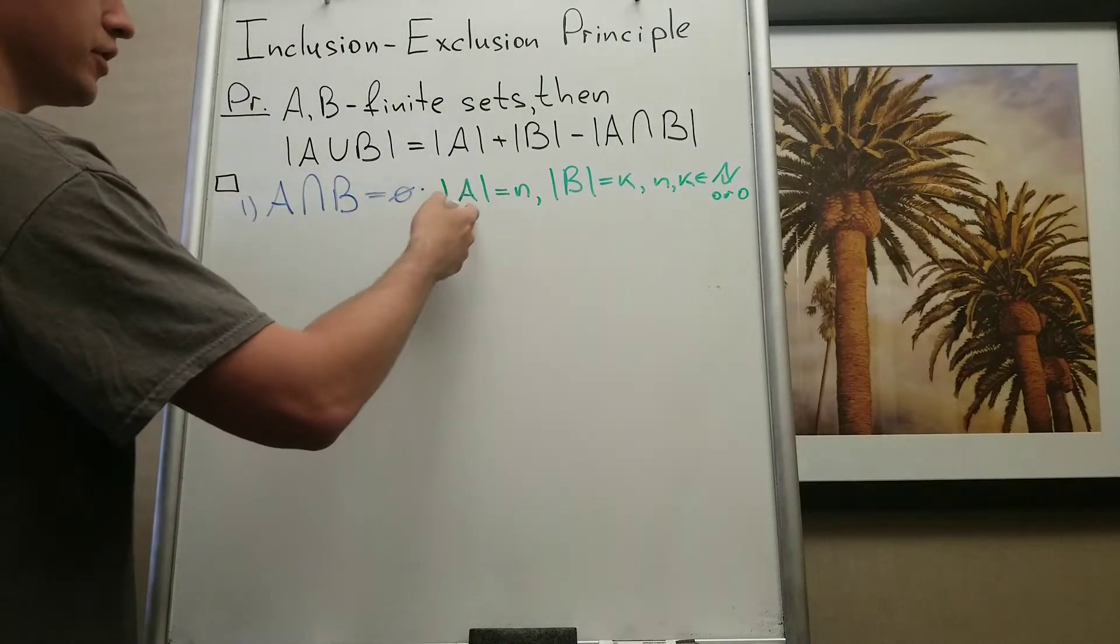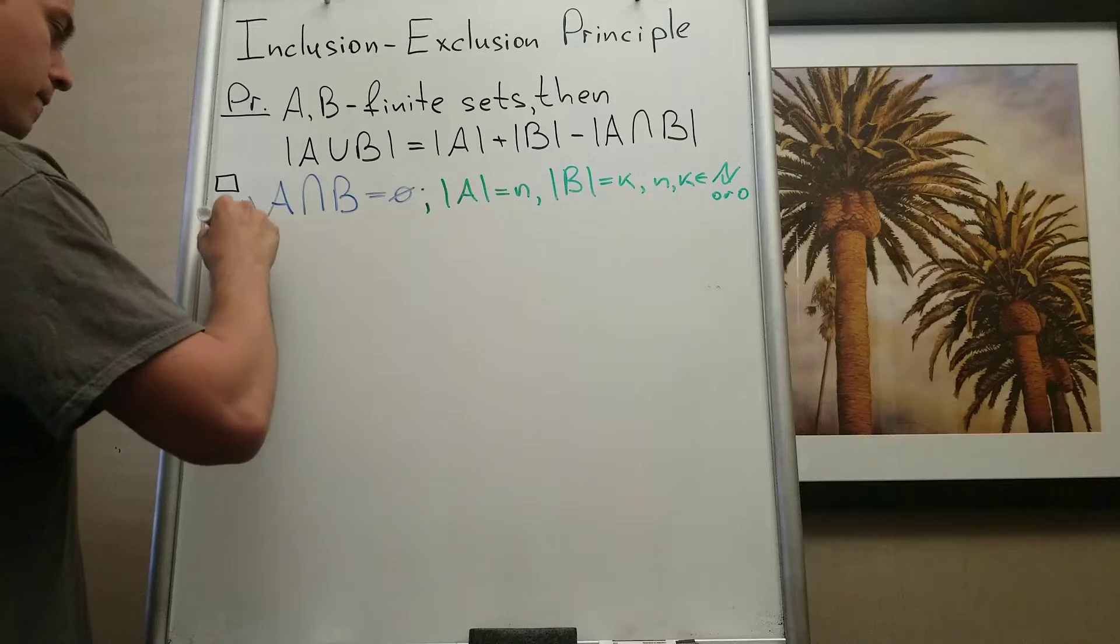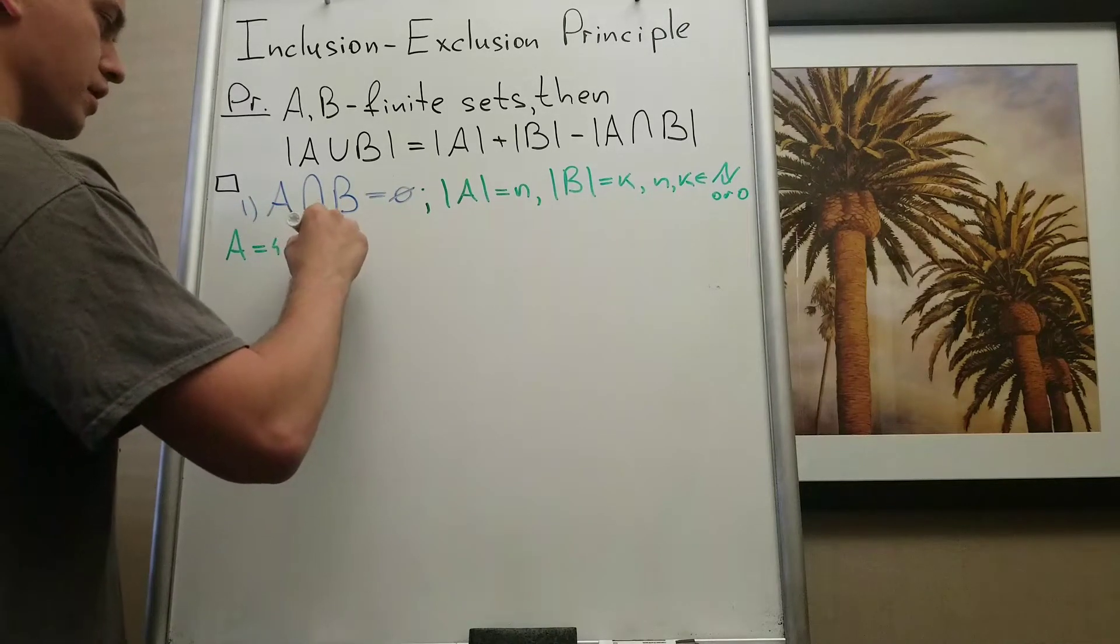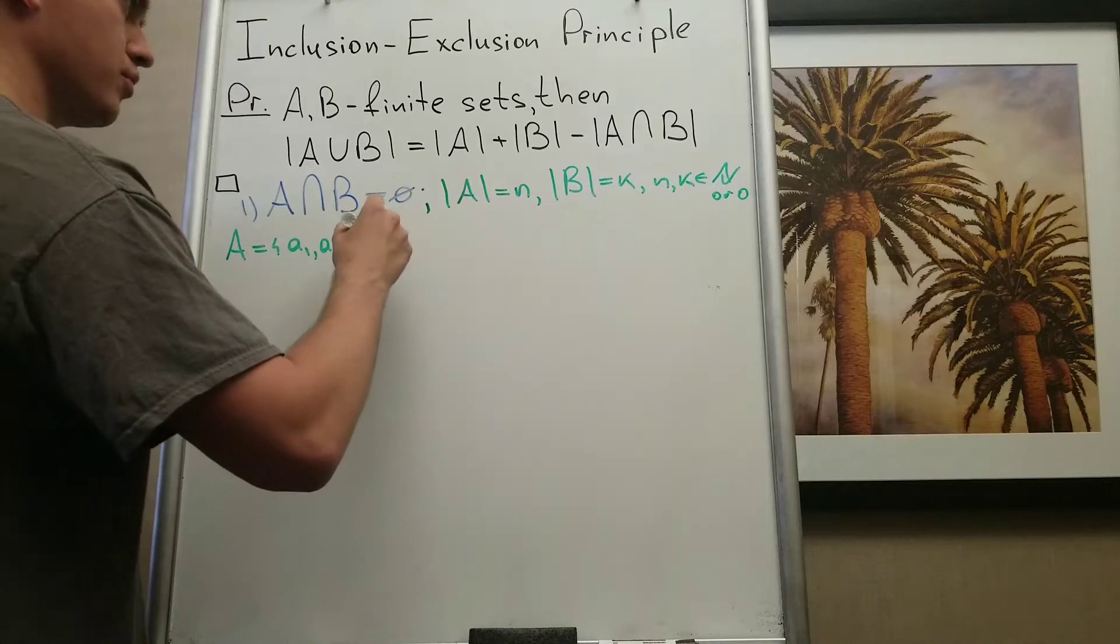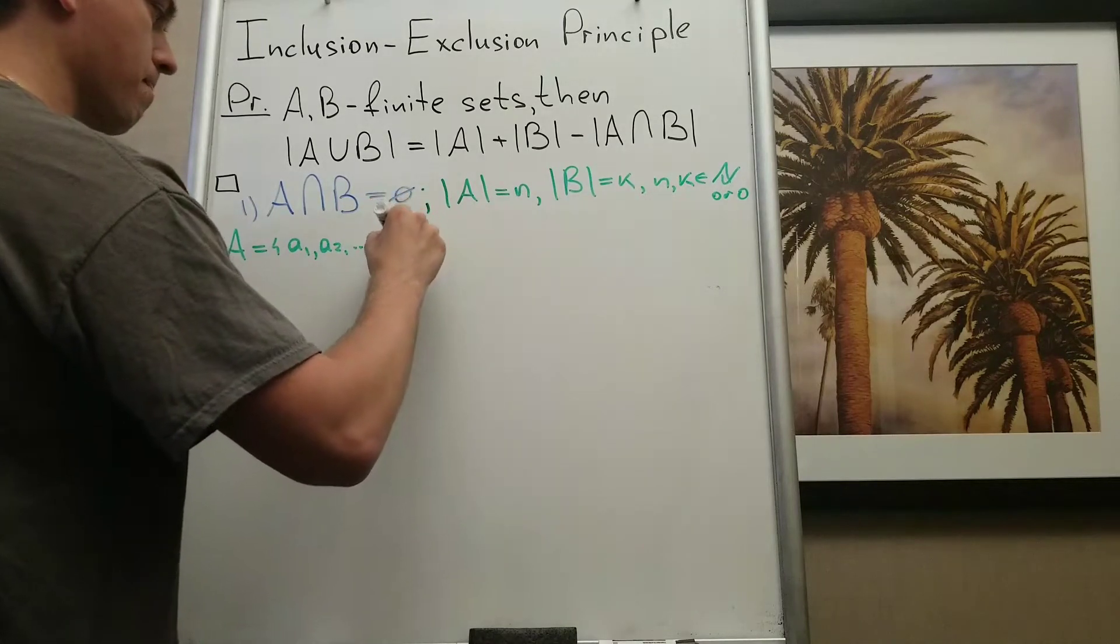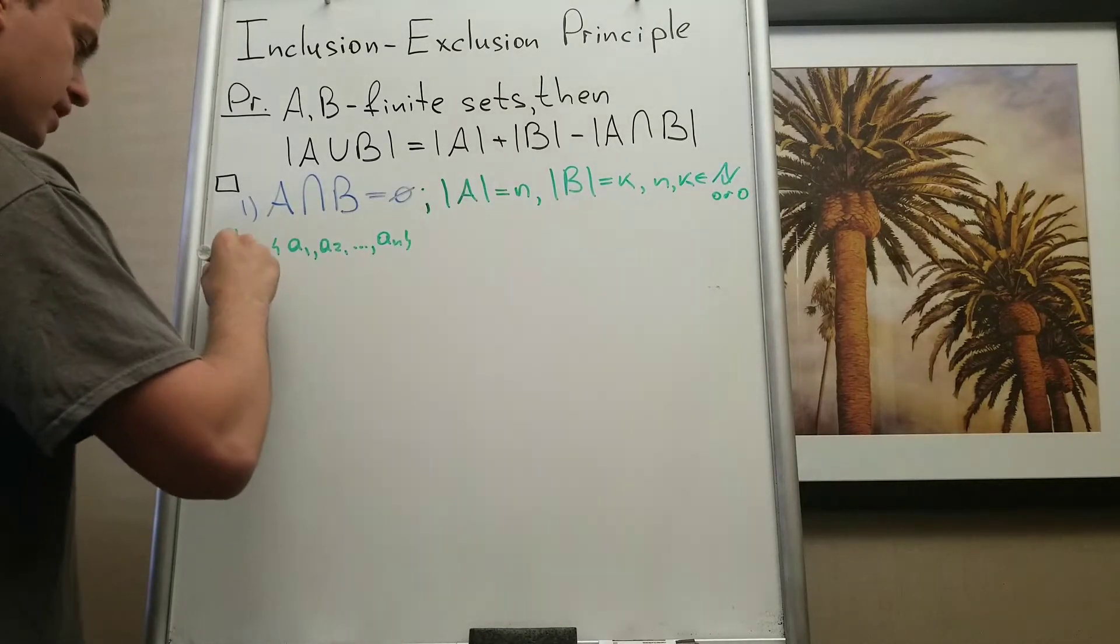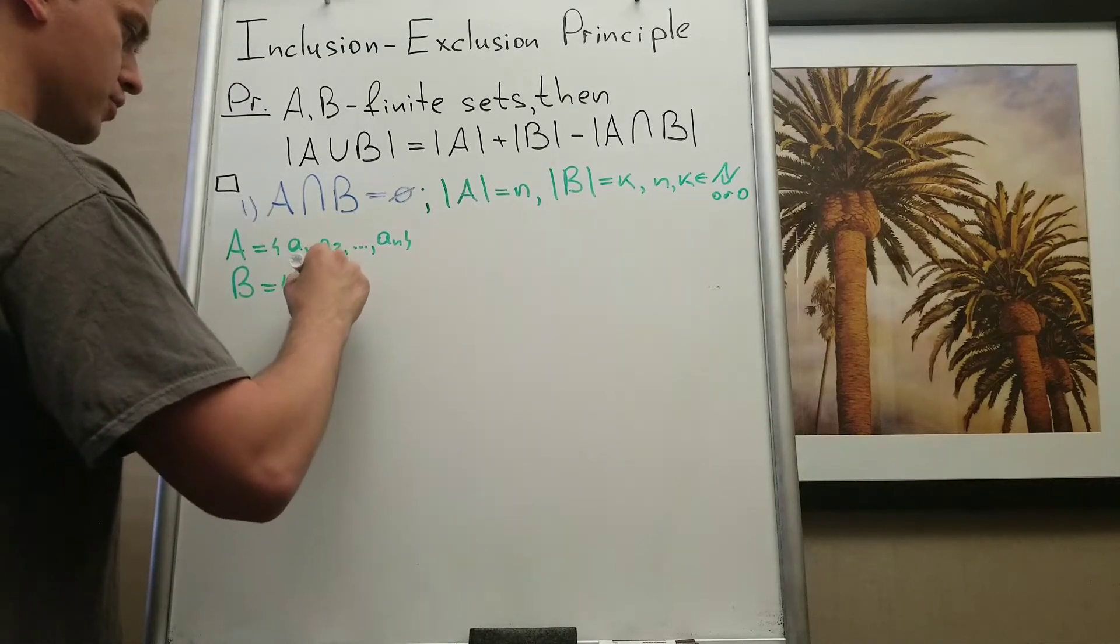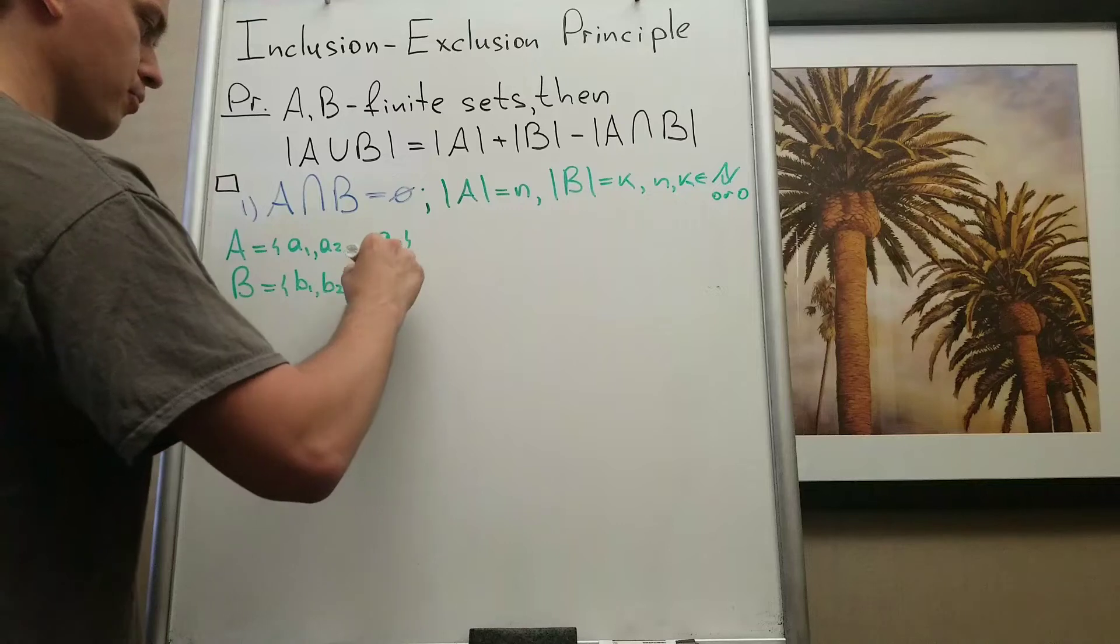So what does it mean that cardinality of A is n? It means that A consists of elements a1, a2, up to an. Cardinality of B is k, so it means we have elements b1, b2, up to bk.